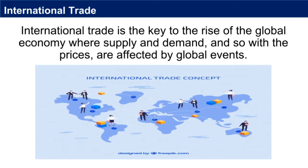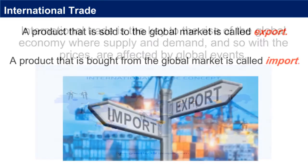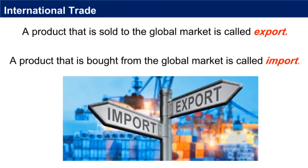Political change in Asia, for example, could increase the cost of labor, thereby increasing the manufacturing costs for an American sneaker company based in the Philippines, which would increase the price charged at the local mall. A decrease in the cost of labor, on the other hand, would result in paying less for the new shoes. A product that is sold to the global market is called export, and a product that is bought from the global market is called import. Imports and exports are accounted for in the country's current account in the balance of payments.